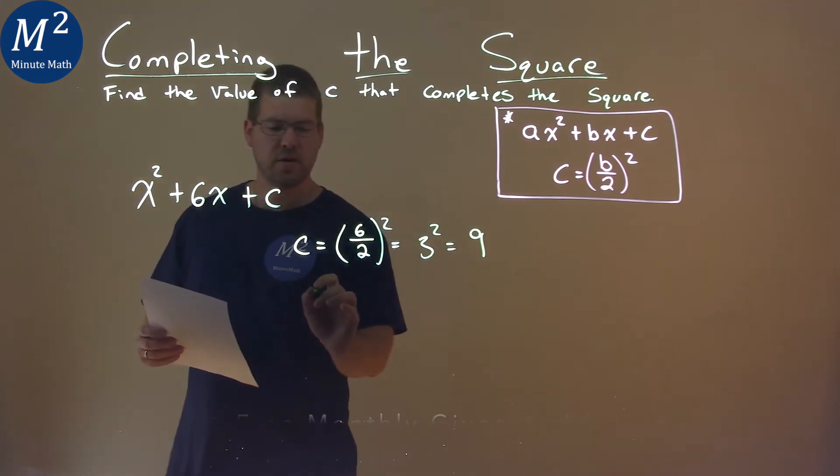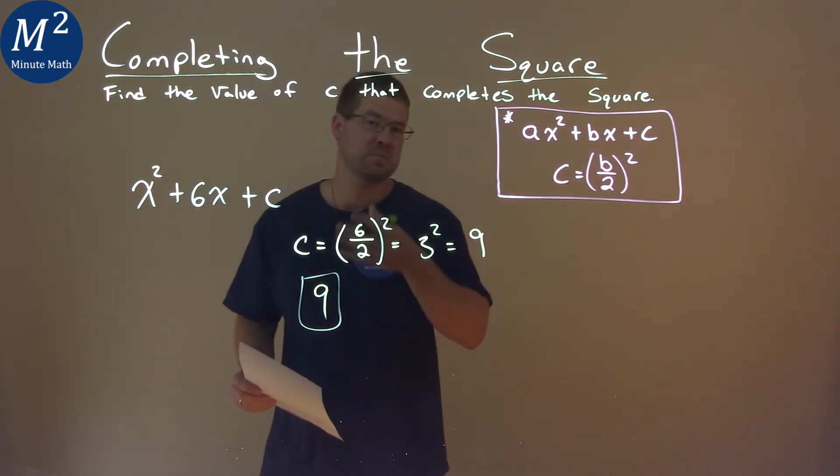And so, our c value here that completes the square is just 9.